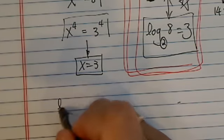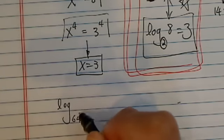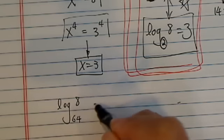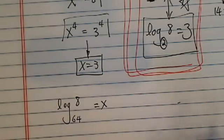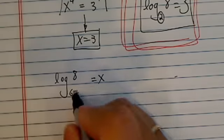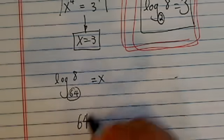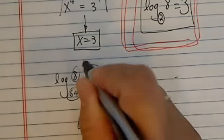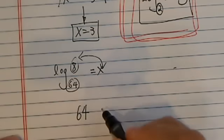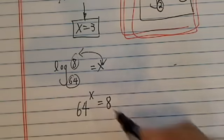Let's try log base 64 of 8 is equal to x. We're asked to find out what x is. Let's try our trick again. Keep the base, swap the hat with whatever is outside. 64 to the x is equal to 8.